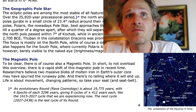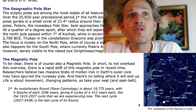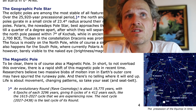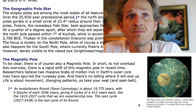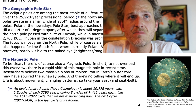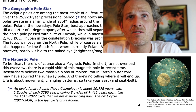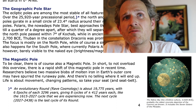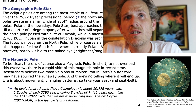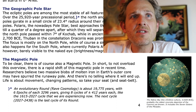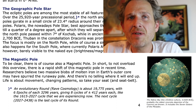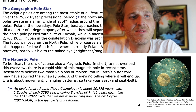The magnetic pole. There is also, of course, a magnetic pole. In short, there is a rapid shift of this magnetic pole in recent times. Researchers believe two massive blobs of molten iron in Earth's outer core may have spurred the runaway pole, and there is no telling where it will end up. Life is all about movement, changing patterns — so take your seat and seatbelt.